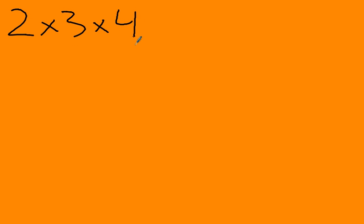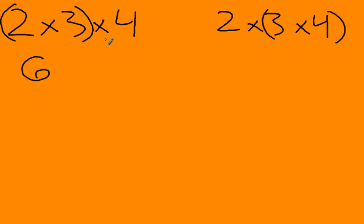So 2 times 3 times 4, and 2 times 3 times 4, I'm going to put parentheses around the 3 times 4 over here. I'm going to put parentheses around the 2 times 3, and that basically just says that I have to do what's in the parentheses first. So 2 times 3 equals 6, and then I still have this times 4, and I know that 6 times 4 equals 24.